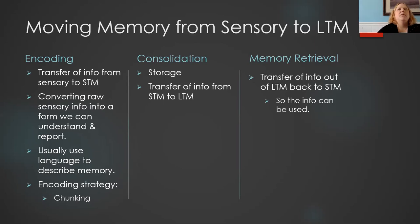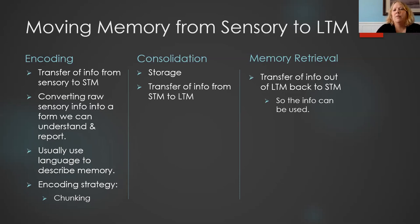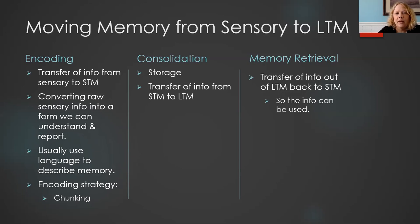How do we actually move memory into long-term memory? We start with encoding — the process of taking in everything going on around us through our senses and converting that raw sensory information into something we can communicate, which tends to be language. From there, we consolidate short-term memory into long-term memory. An important factor in getting information into long-term memory is sleep — quite a bit of consolidation from short-term to long-term memory happens while we're sleeping.